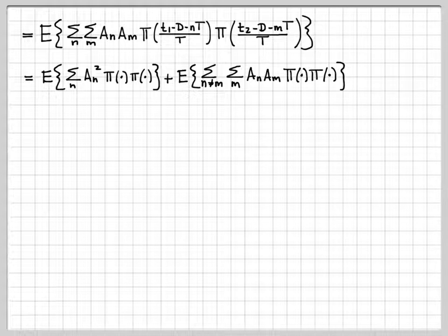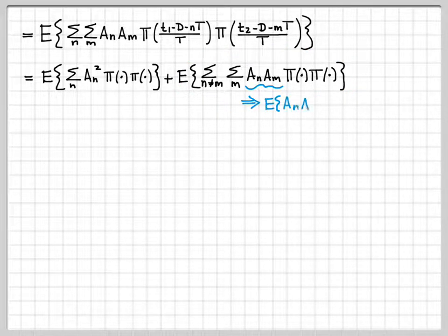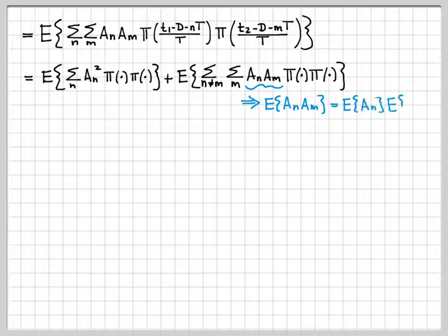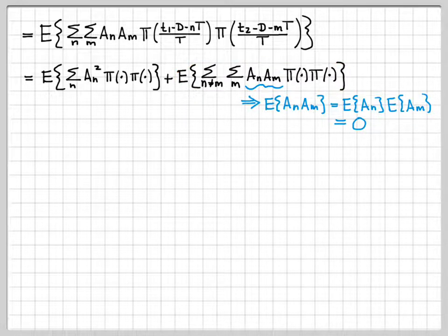When m equals n, I have an times an, which is an squared. Over in the off-diagonal part, it's always an times am where they're different. When I bring the expectation operator inside the off-diagonal part, I end up with the expected value of an times am. Since these are independent random variables, it factors. We've already determined that the expected value of an is 0, so this equals 0. All the off-diagonal terms go away due to their expected value being 0.